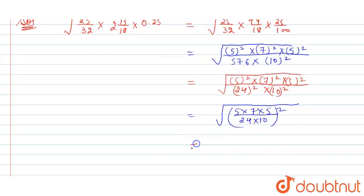And the under root is removed by 1/2 power because both are the same, so here 2 and 2 get cancelled. And 5 by 10, that is 5 to 10, so the 2s cancel.